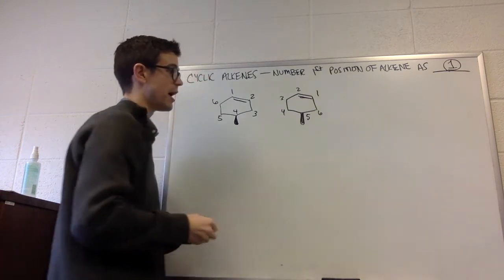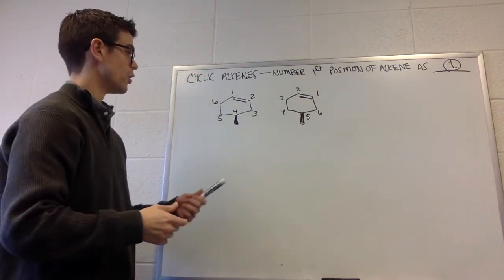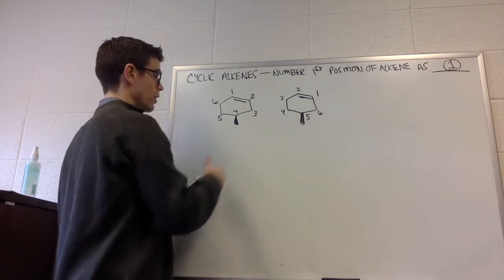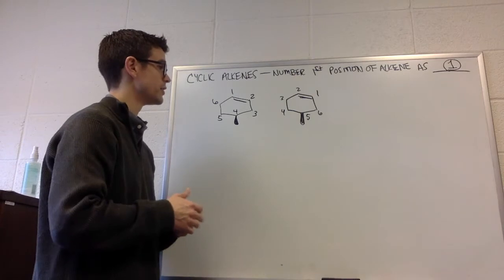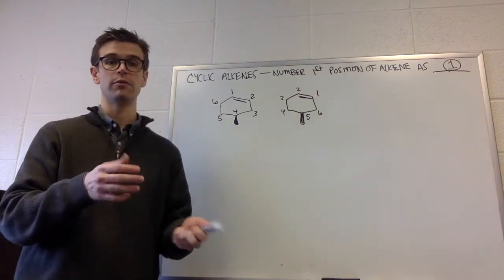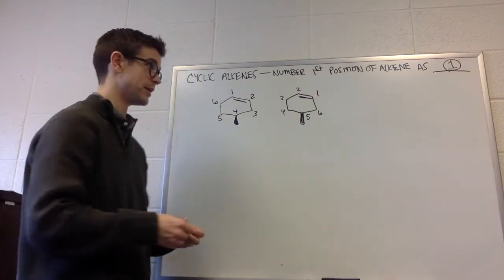So we would go with the one that has it as position four, because four is a lower number than five. That should make sense based on all of our previous naming experience.